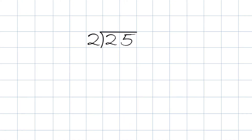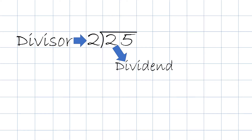Today, in front of us, we have 25 divided by 2. One of the ways to write it is like this — 25 will be the dividend, and 2 will be the divisor.